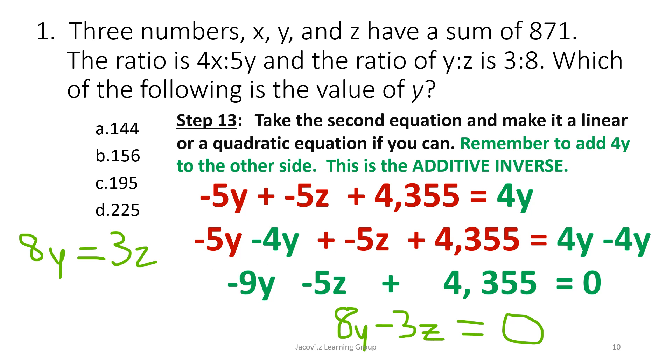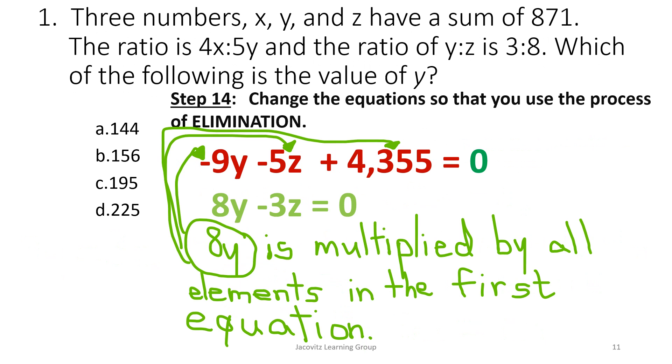We're halfway done. So when we get ready to solve, look at this. Looks like a mess. We took this negative. We took the inverse of this and took this negative 4 over here. We took it over here. We got negative 9y. Because when you add two negatives, you get negative 9y, 5z plus 4355 zeros over here. Now you have 8y minus 3z equals 0. System of an equation. Guess what? Negative 9y minus 5z plus 4355 equals 0. 8y minus 3z equals 0.